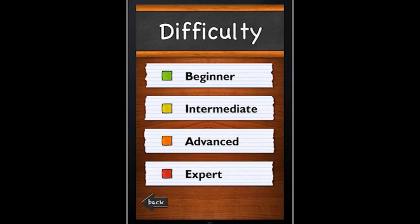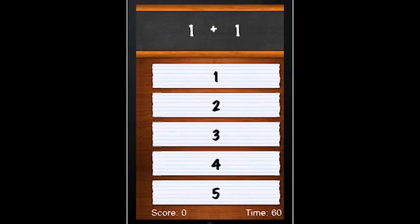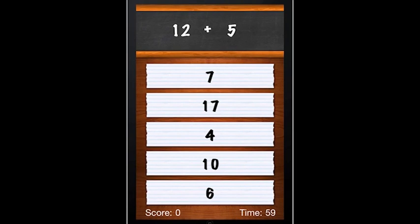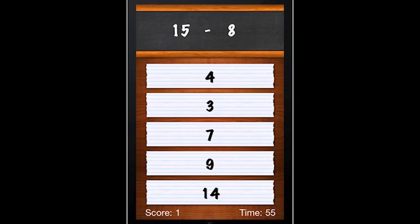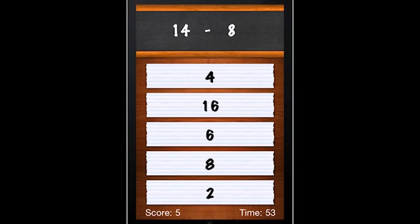You have 60 seconds to answer as many equations as you possibly can. For each equation you get right, as you'll see in the bottom left-hand corner, you gain two points. For each question you get wrong, you'll lose one point.